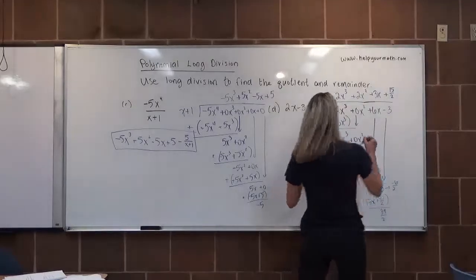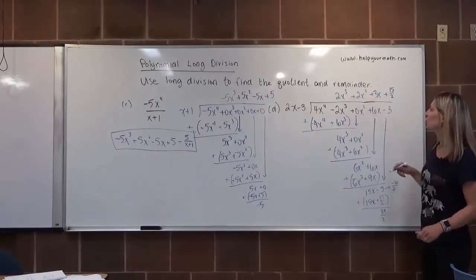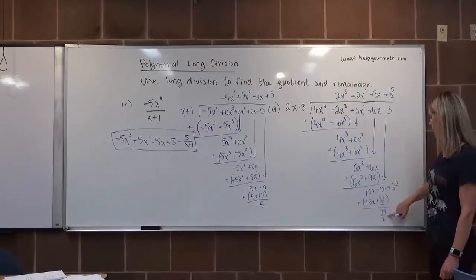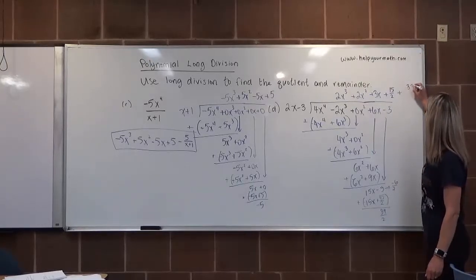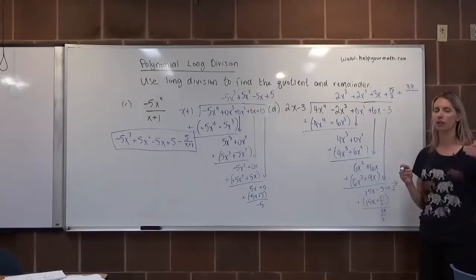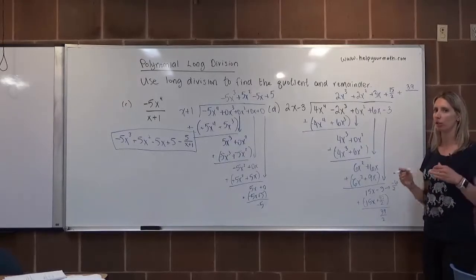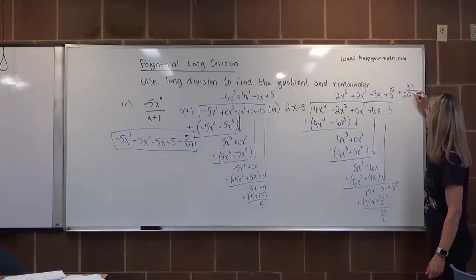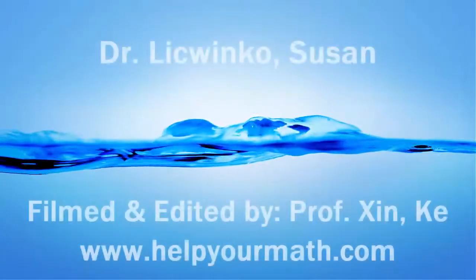Let's write the whole thing out. The quotient is 2x³+2x²+3x+15/2. For the remainder, rather than writing (39/2)/(2x-3), we can combine the denominators, so it becomes 39 over 2(2x-3). That's the final answer for part D.